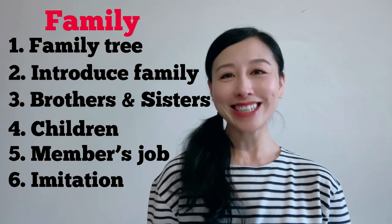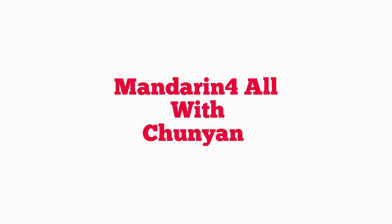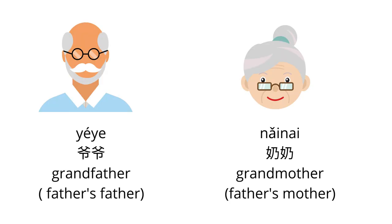Let's get started. Part 1: Family tree. Grandfather — father's father: 爷爷. Grandmother — father's mother: 奶奶.